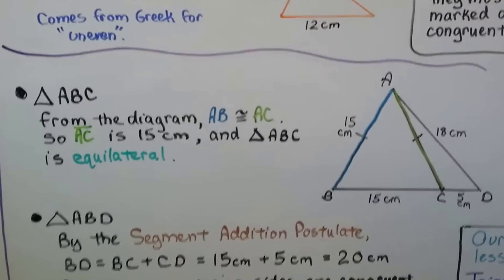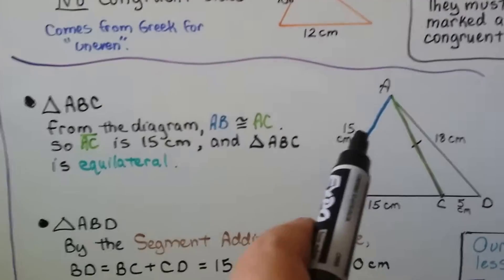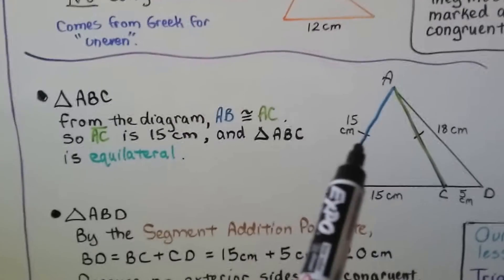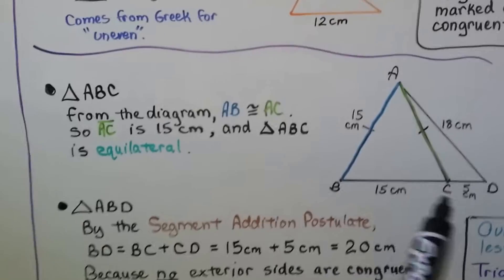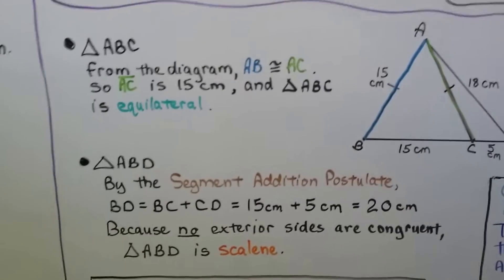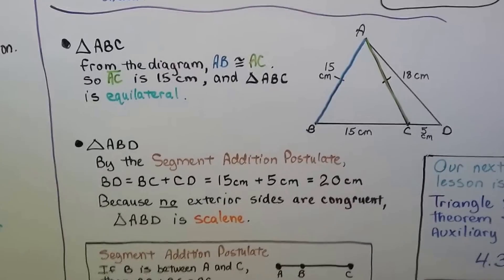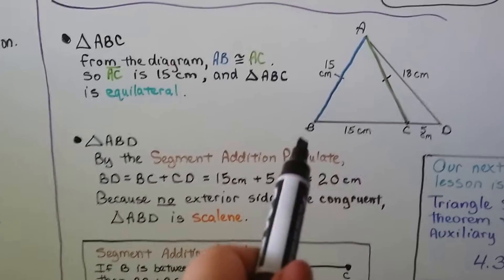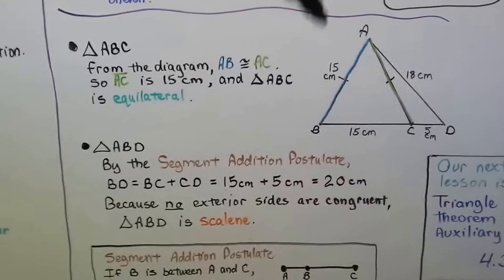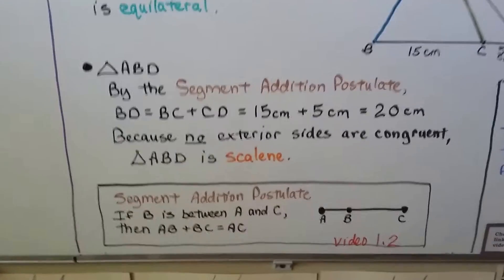Look at triangle ABC on the left. AB is congruent to AC — we can see the congruent marks. This means AC is 15 centimeters, and the base is also 15 centimeters, so triangle ABC is equilateral. For triangle ABD, by the segment addition postulate, BD equals BC plus CD, which is 15 plus 5 equals 20. So the sides are 15, 18, and 20 centimeters — no sides are congruent, so triangle ABD is scalene.